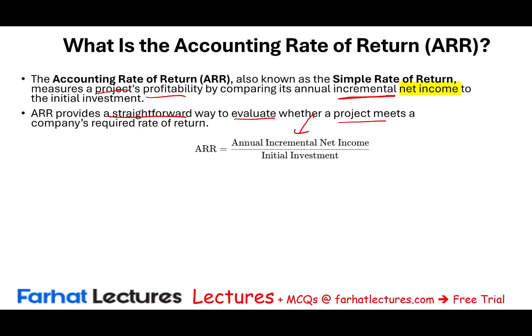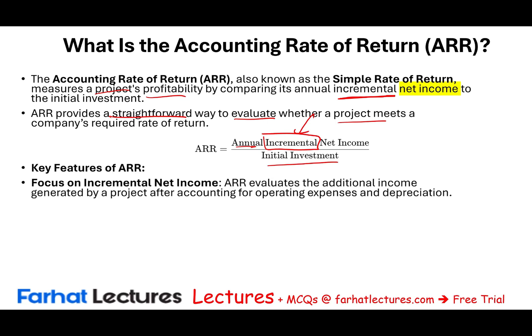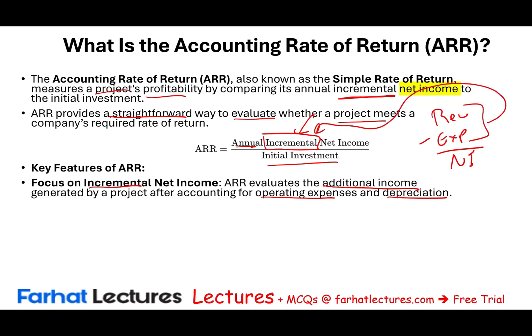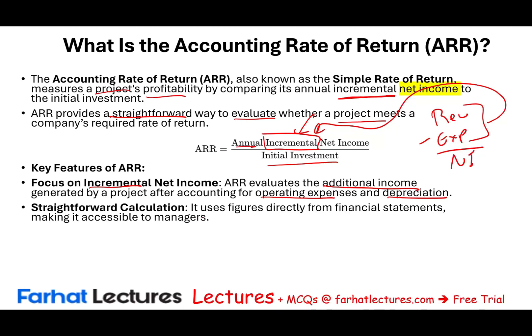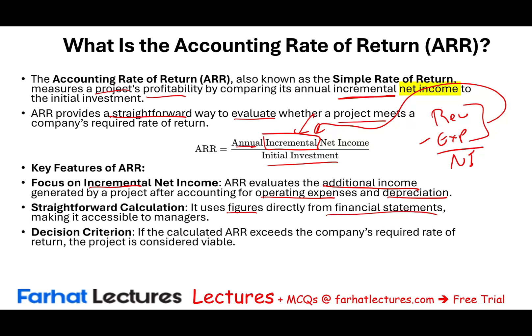The ARR formula takes the incremental net income — the annual one — and divides it by the initial investment. It focuses on the incremental additional income generated by the project after accounting for expenses and depreciation. Net income is the result of revenues minus expenses, and we count only the additional incremental revenues and expenses that are part of this project. It's a straightforward computation using figures from the financial statements. If the calculated ARR exceeds the company's required rate of return, the project is considered viable.